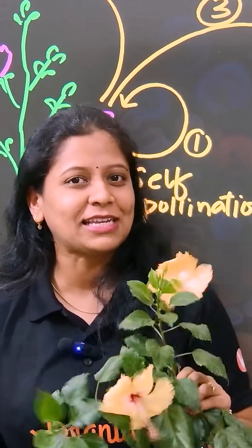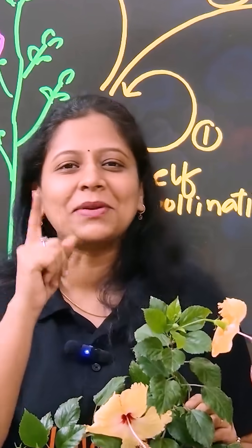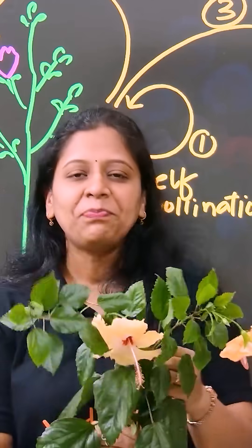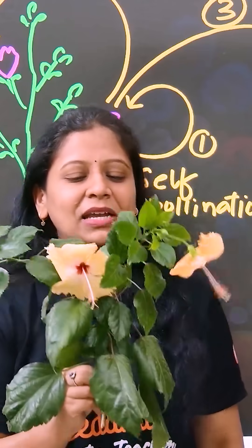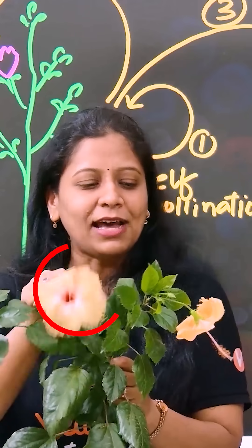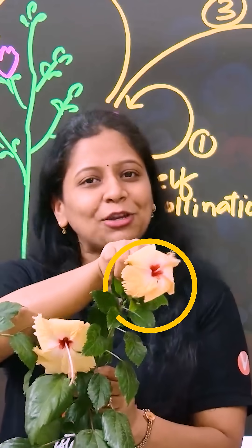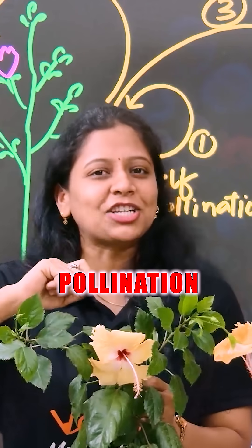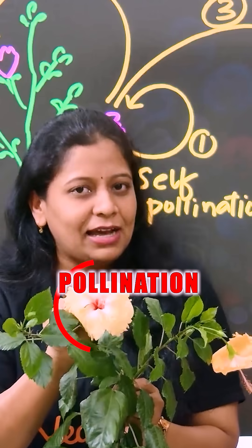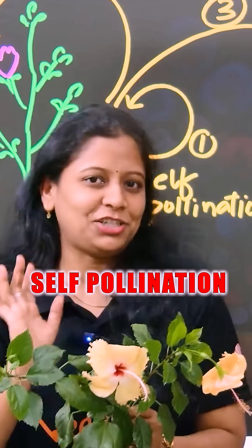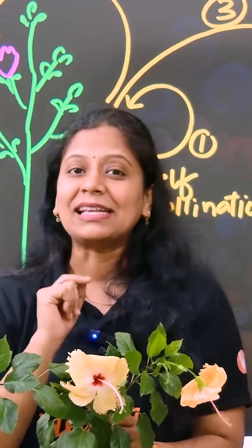Next time, whenever you see this, try to remember the concept of pollination. Imagine this as one single plant. If pollination happens in this single flower, we have self-pollination.